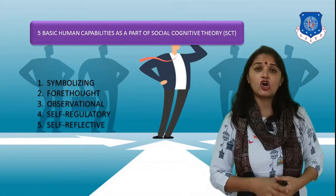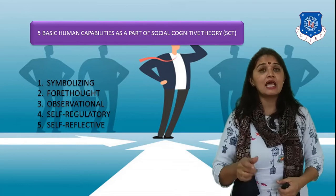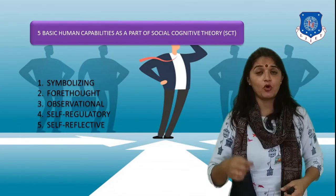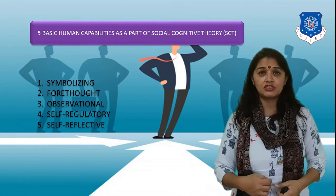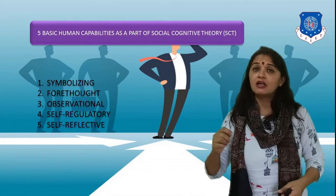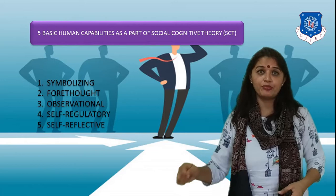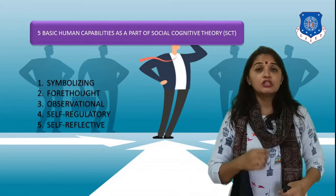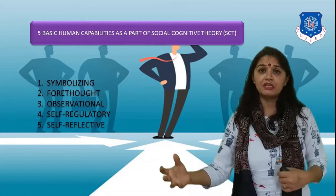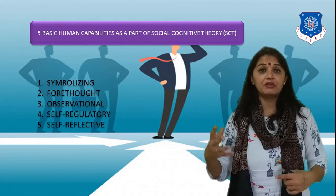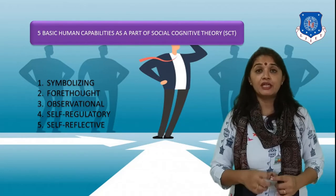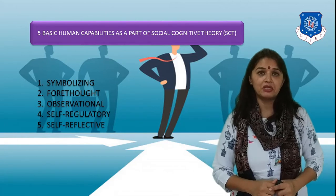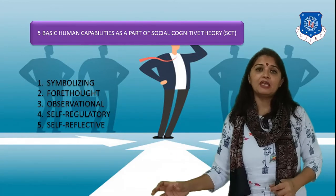The fifth and last capability is self-reflective. Every employee always reflects upon their own actions — whether they have done good or not, how much they have performed, whether they need to improve, whether they need to repeat or stop a certain behavior. This self-reflective nature also helps a human being in shaping their behavior and actions.